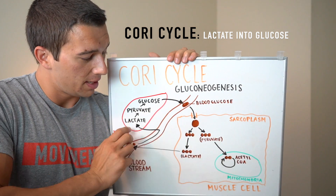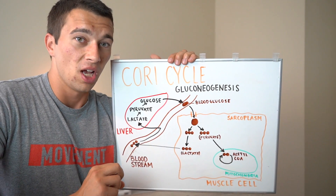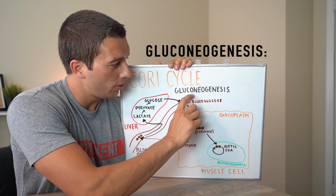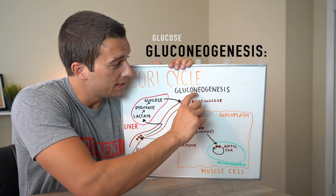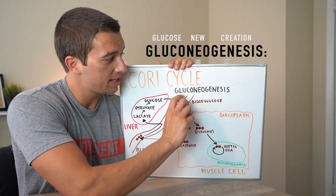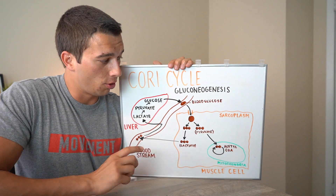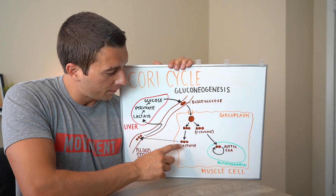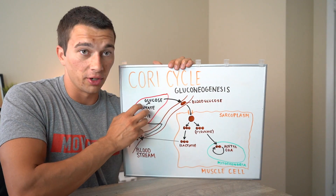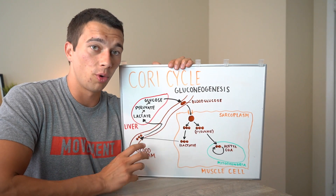The Cori cycle is what's occurring in the liver, and it's one form of gluconeogenesis. What is gluconeogenesis? Let's break that word down: gluco, standing for glucose; neo, meaning new; and genesis, meaning creation. So any time we see gluconeogenesis, think of it as the creation of new glucose. In the case of the Cori cycle, that new glucose molecule was created from the lactate that left the muscle cell, went through the bloodstream, and then to the liver. That's how gluconeogenesis works in the liver, and that's really what we're talking about when we say the Cori cycle.